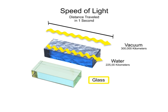In glass, light travels at 67% of its speed in a vacuum, so the light speed is 300,000 times 0.67, or about 200,000 km per second.